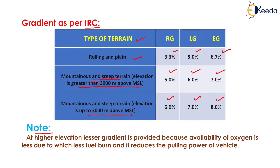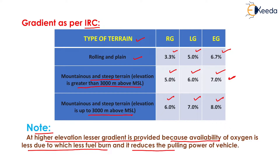At higher elevation, lesser gradient is provided because availability of oxygen is less, due to which less fuel burns and it reduces the pulling power of the vehicle. So if the availability of oxygen is very less at very high altitude, it reduces the pulling power of the vehicle, and to counteract this effect we have to reduce the gradient at higher elevation.